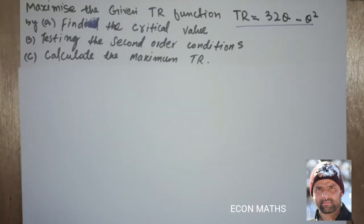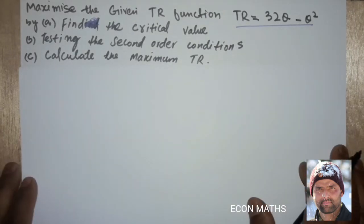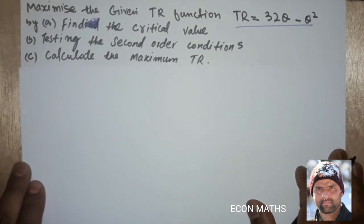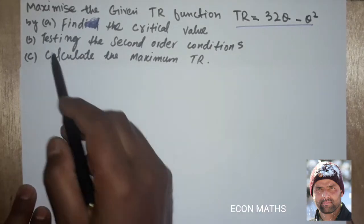Hi, this is Halal. In this video on optimization, we will try to find the critical value, test the second order condition, and calculate the maximum total revenue from the given total revenue function.